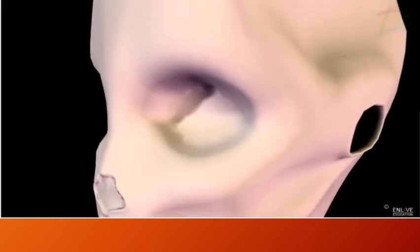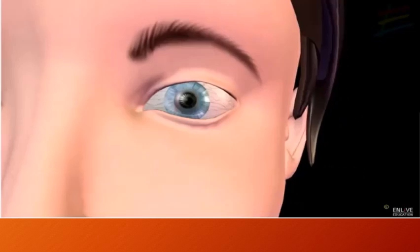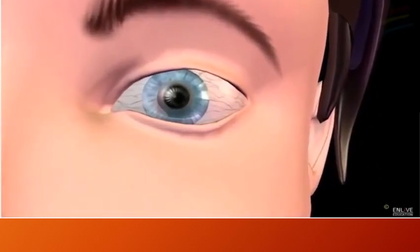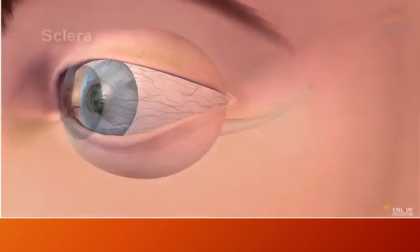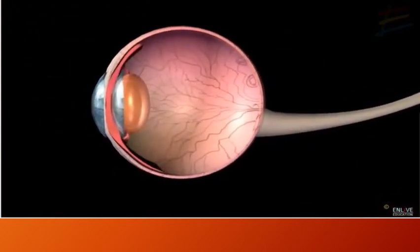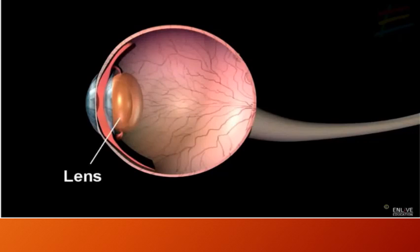This is the empty eye socket within the skull, with its bony wall inside and a bony orbit in front. The capsule of the eyeball appears to have three layers. The thick, tough outer layer is called the sclera and serves to protect the delicate structures within. The transparent bulging portion is called the cornea.